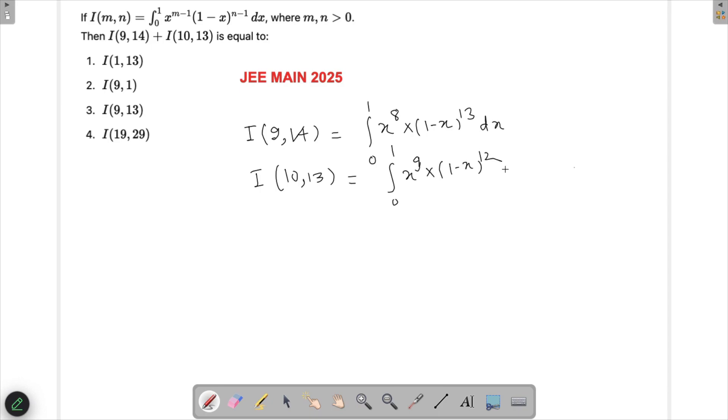What we're supposed to do is add these two together. So this is I(9,14) plus I(10,13), and then when I add these, this will become 0 to 1.